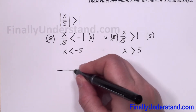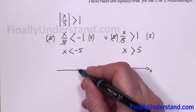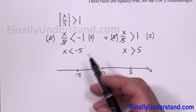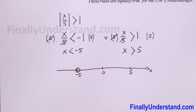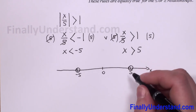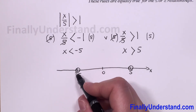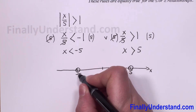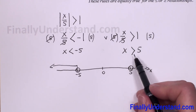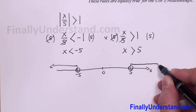Now we have to draw the number line. We find 0, with negative 5 on the left side and 5 on the right side. We have the less than sign, so negative 5 is not included — it's an open circle. The same applies to 5, since x is greater than 5. The values where x is less than negative 5 go toward negative infinity, and the values where x is greater than 5 go toward positive infinity.